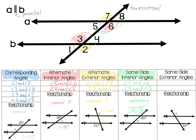Our final type of angle relationship is same side exterior angles. Same side means the same side of the transversal, and exterior means outside of the parallel lines. That means angle 1 is paired with angle 7, and angle 2 is paired with angle 8, because they're on the same side and they're both exterior.